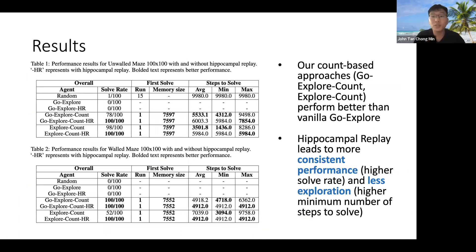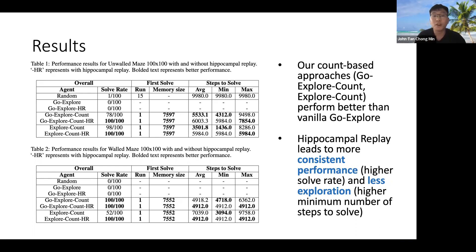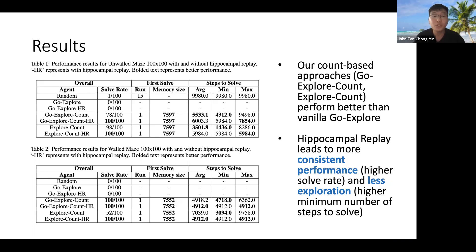Overall, these are our results. We show that our count-based approaches, GoExplore count and Explore count, perform better than vanilla Go Explore. Also, Hippocampal replay leads to more consistent performance, shown as a higher solve rate, as well as requiring fewer steps to solve. This means that Hippocampal replay can help us find better solutions while still maintaining a high success rate. Thank you.